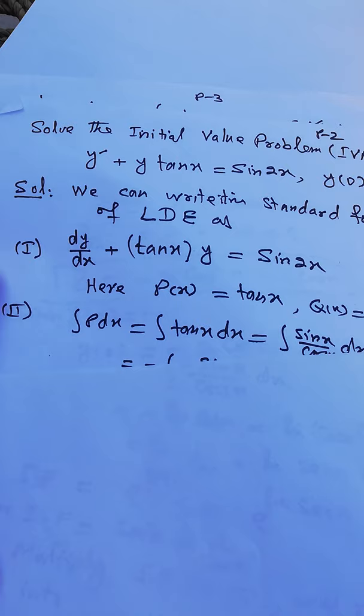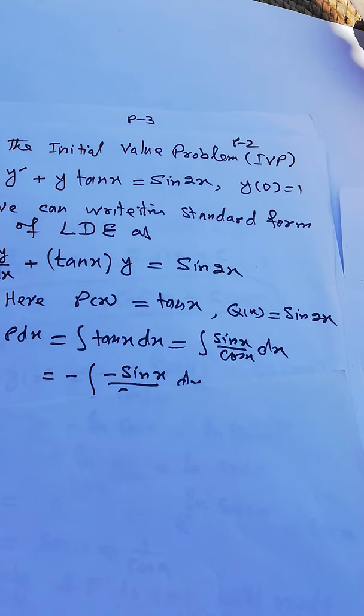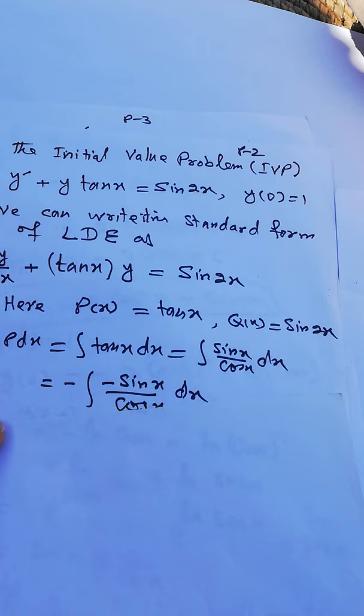The next step is to find the integral of P with respect to x — that is, integral of P dx. This becomes the integral of tangent x dx, which equals the integral of sine x over cos x dx.